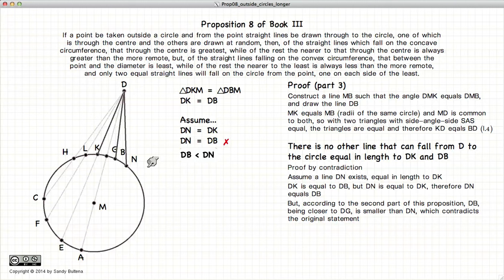And since we have a contradiction that demonstrates that DN cannot be equal to DK. And there we have demonstrated the third part of this proposition is that there is only one other line that is equal to DK in length, coming from the point D. So DK is our starting line, and that there is one and only one other line that is equal in length. And that is DG. And thus we have demonstrated all three parts of this proposition.